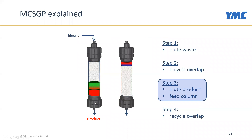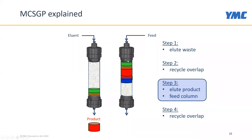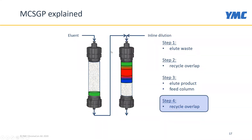The next portion coming off the first column is the product. We continue the gradient and collect the product. At the same time, on the second column, we load new feed material in parallel, which mixes with the overlapping recycled portion at the column entrance. Looking back at the first column, the overlapping portion of product and strongly adsorbing impurities is transferred from the first column into the second column, again with inline dilution so it stays at the entrance of the second column.